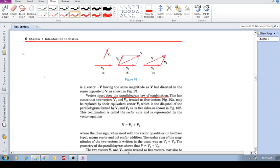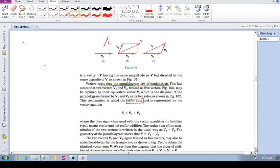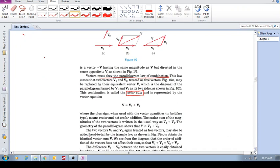So, if we want to add these two vectors to each other, they must obey the parallelogram law of combination. Meaning, we put them tail to tail, and we complete the parallelogram, and V becomes the vector sum. The vector sum of V1 and V2. This is the parallelogram law of combination.